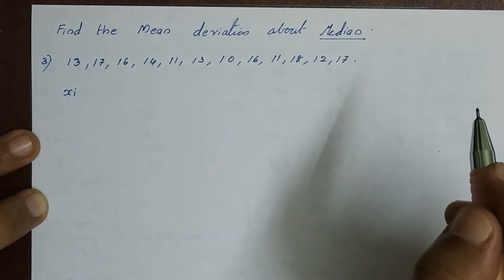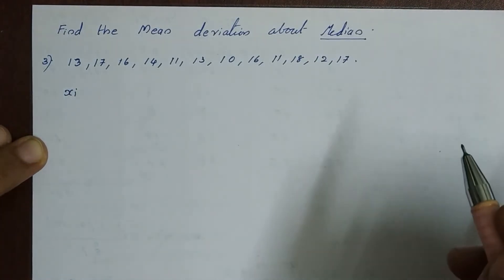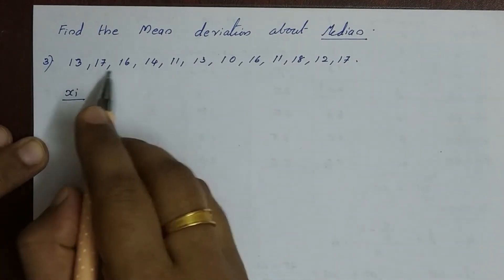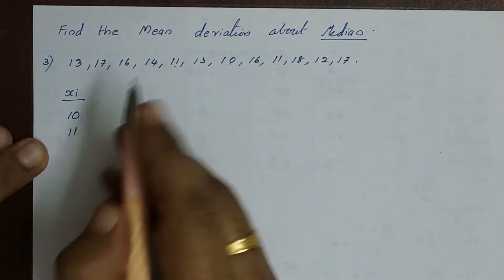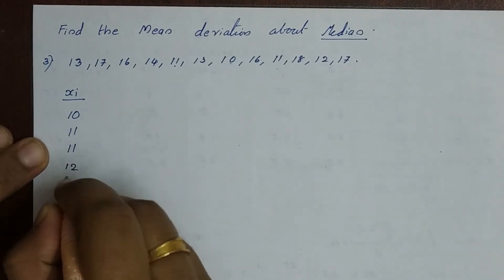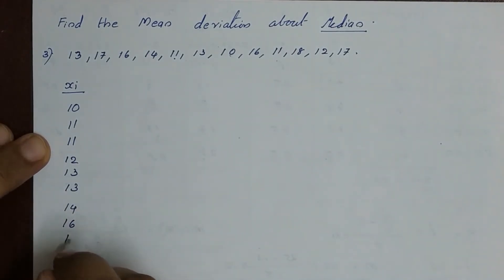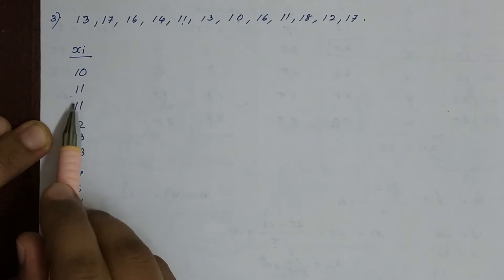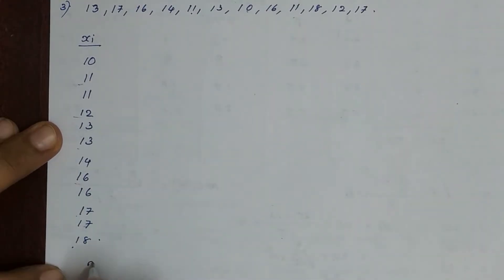Now we find the median. The first step is to arrange the data in ascending order. So the observations xi are: 10, 11, 11 (appears 2 times), 12, 13, 13 (appears 2 times), 14, 16 (appears 2 times), 17 (appears 2 times), 18. For this ungrouped data, n equals 2 plus 2 plus 4 plus 6 plus 8 plus 10 plus 12, which is equal to 12.